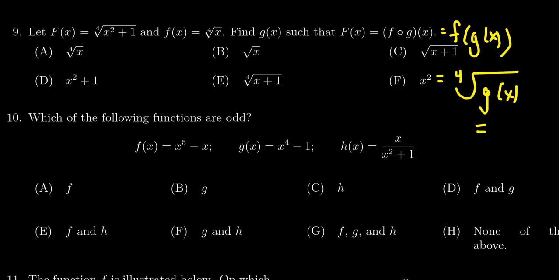And this is supposed to equal capital F of x. So the idea here is what goes inside of the fourth root. And we can see that very clearly right here. The thing that goes inside of the fourth root is x squared plus 1. So that's what g has to be.